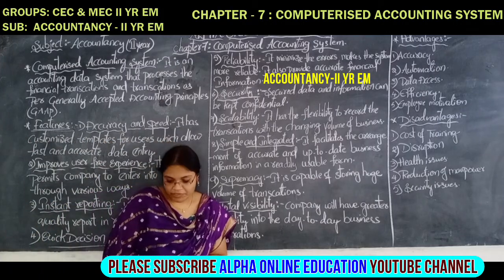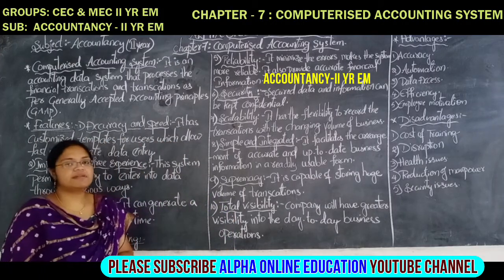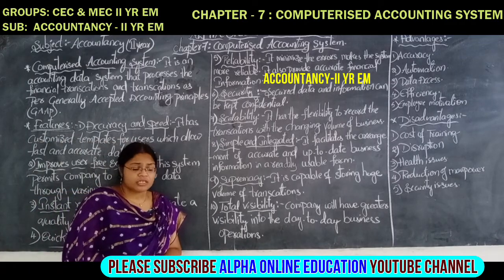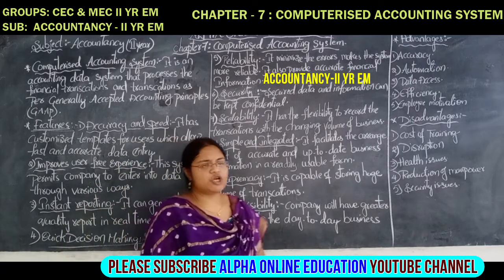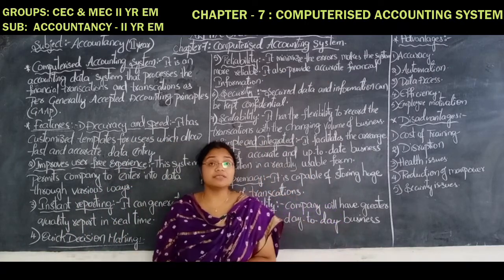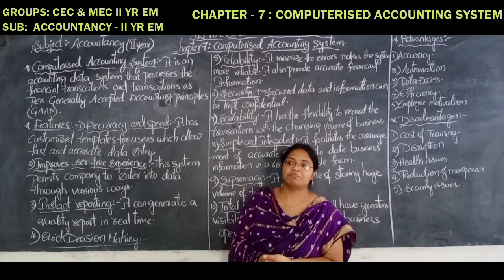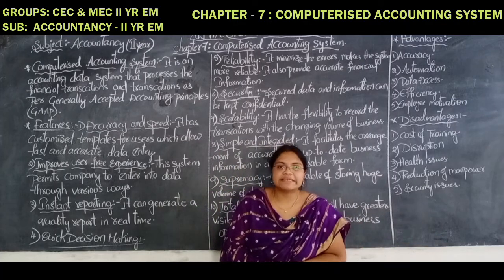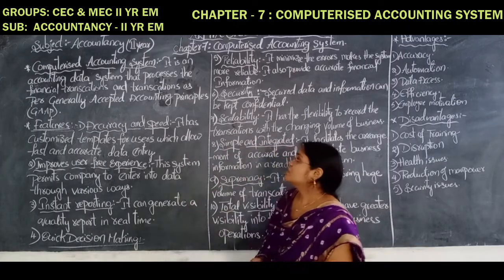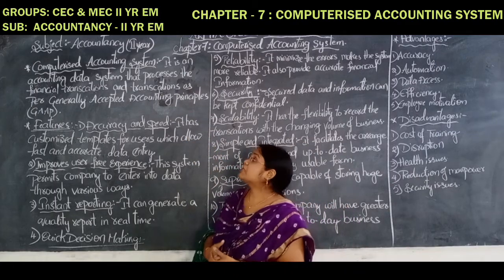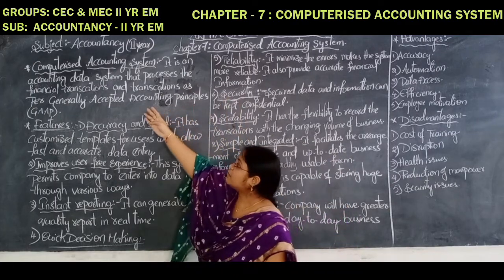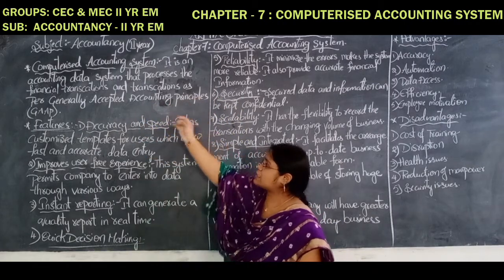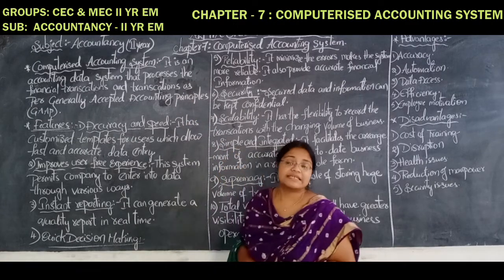Good morning, welcome to Go All for Online Education. Accountancy for the second year's English medium — the chapter we are dealing with is the computerized accounting system. Before going into this chapter: what is an accounting system? Doing of accounts is an accounting system. Then what is a computerized accounting system? It means doing accounts with the help of a computer. The definition: a computerized accounting system is an accounting data system that processes financial transactions as per generally accepted accounting principles, that is GAAP.